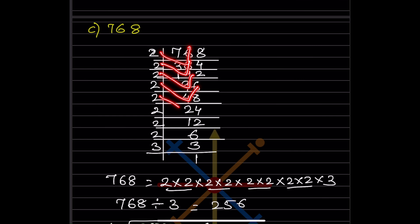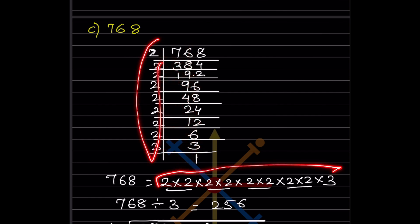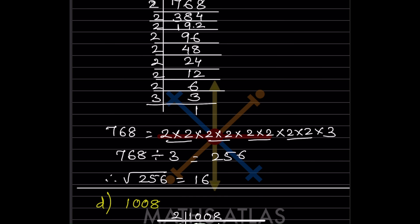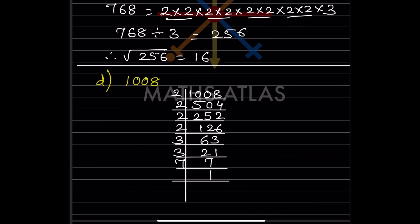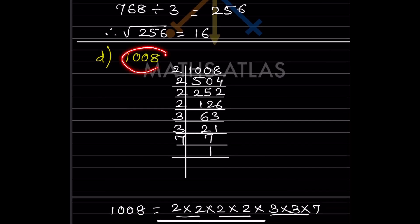Again for 768, we start with 2. After finding the factors — 2, 2, 3, 3, and the remaining — we write them and group into pairs. The number 3 is alone. So we divide 768 by 3, which gives 256. The square root of 256 is 16, because 16 × 16 = 256.